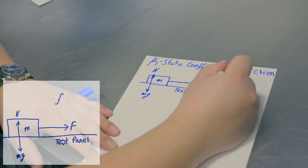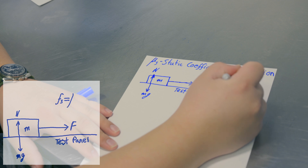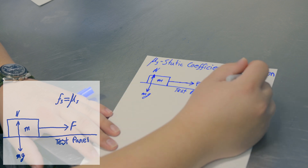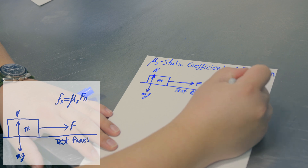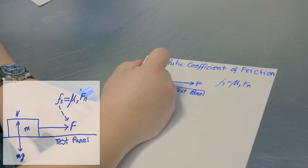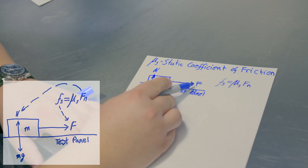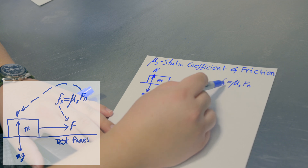The formula is: the static force of friction equals mu — the Greek letter representing the static coefficient of friction — multiplied by Fn, which is our normal force. The normal force correlates to Fn, and the force along the surface correlates to the static friction force. Static force of friction and normal force typically use units of force, specifically newtons.